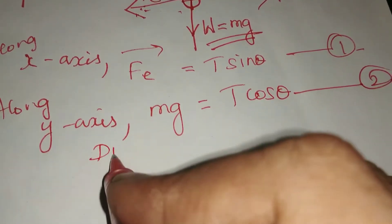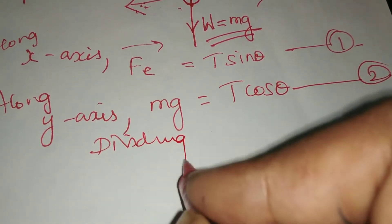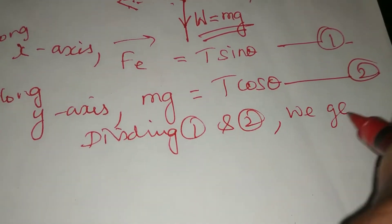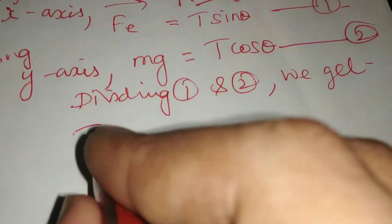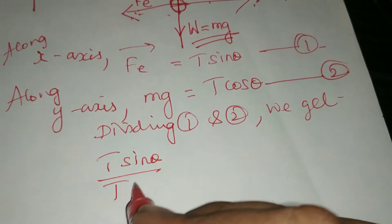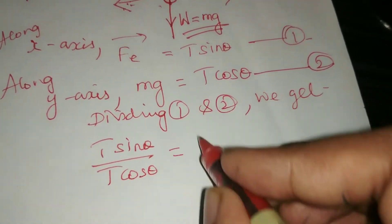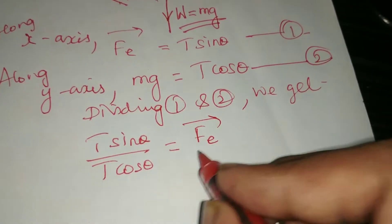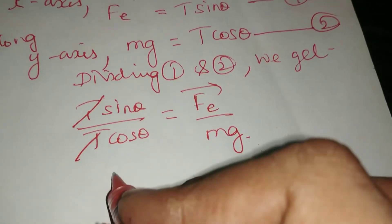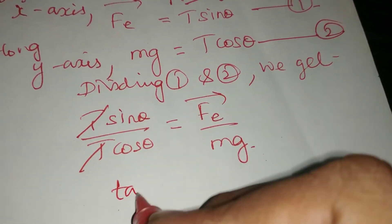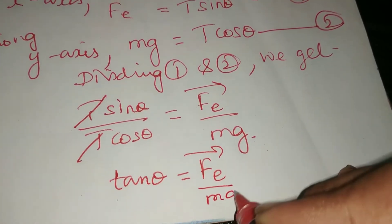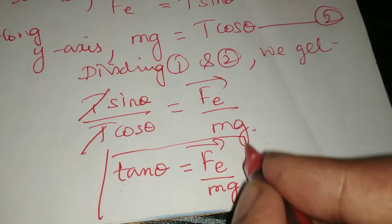Dividing equation 1 by equation 2, we get T sin theta divided by T cos theta equals Fe over mg. The T cancels, sin over cos gives tan theta, so tan theta equals Fe over mg. This is equation 3.